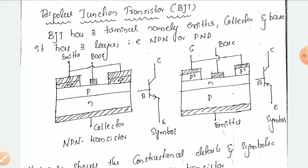Bipolar junction transistor is shortly called as BJT. This BJT has three terminals. Those terminals you can name as emitter, collector, and base. Whereas your MOSFET is having gate, drain, and source, BJT is having three terminals: that is emitter, collector, and base.